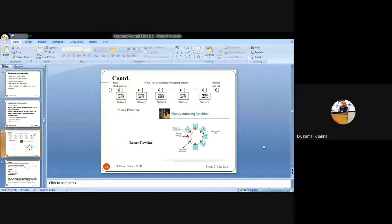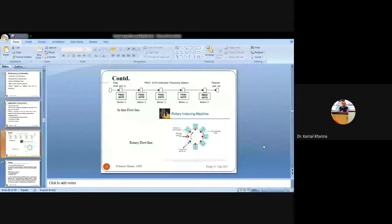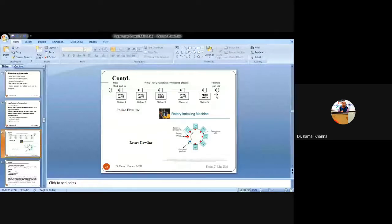From the figure, you can see that when raw material enters the flow line it passes through five stations where operations are performed — five kinds of operations on five stations. The first figure shows the inline automated flow line, where the specimen flows in one direction. If there is a space constraint it can move 90 degrees to the left or right, depending on the space constraint or the placement of machines in the shop floor. This is the inline flow line.